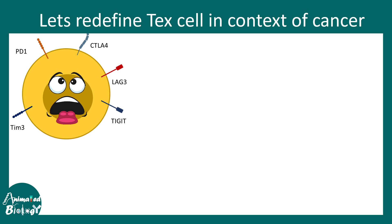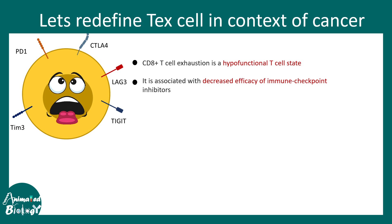Importantly, exhaustion is not a different cell type — it is a state of a cell. Just like sometimes you feel frustrated and exhausted, T cell exhaustion is a molecular state, a stage of a T cell's life that some cells undergo, particularly those acting on the front line to fight cancer.